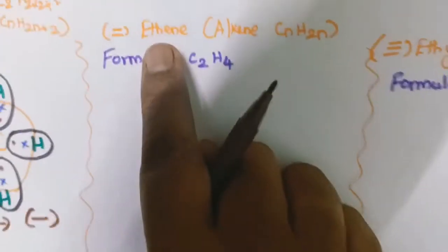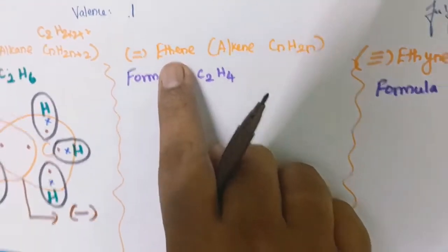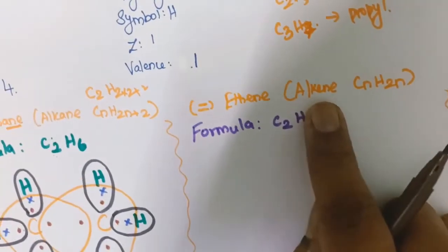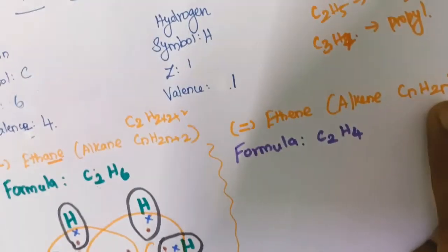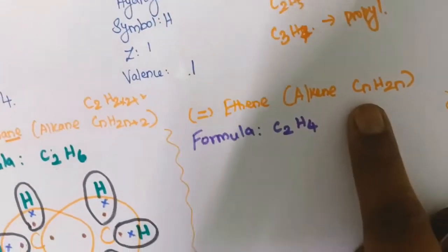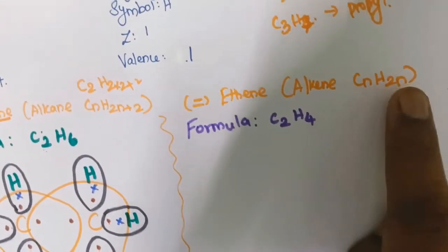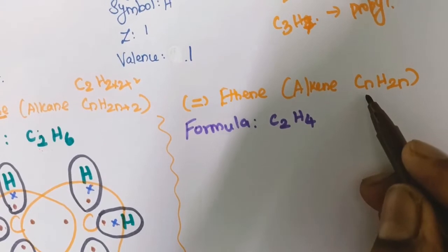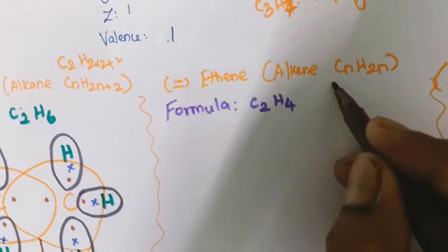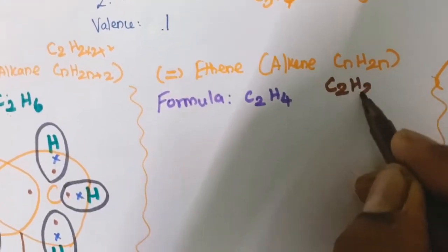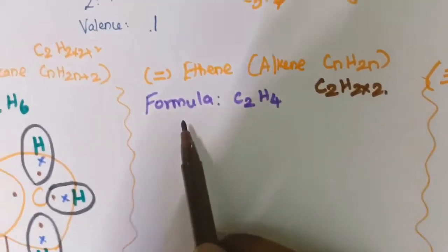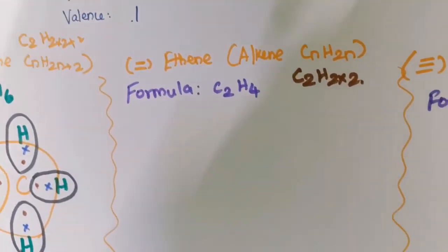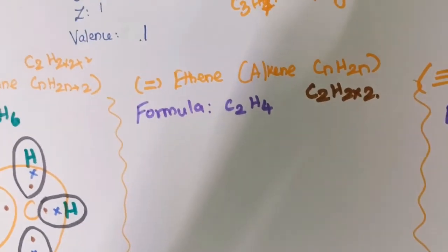Next, we are going to see about ethene — alkene. What is the general formula for alkene? CnH2n. Here I am going to take 2 carbons. So C2H, 2 into 2 — the molecular formula is C2H4.